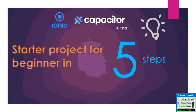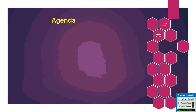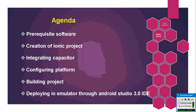Here we have created an Ionic native Android application using Capacitor. The Ionic team created a new project called Capacitor, which will replace the Cordova layer of our project. Today this is in alpha version only, and we are going to create a simple, very basic project and see how to deploy it to the simulator. Today we are going to see how to create a project and how to integrate Capacitor in an Ionic project.